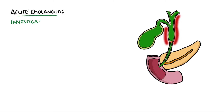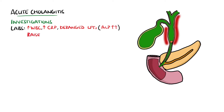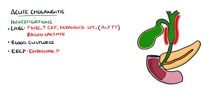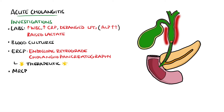Lab tests will show leukocytosis in most instances, as well as deranged liver function tests, especially a raised alkaline phosphatase. Lactate levels may also be raised, which if found in the context of hypotension typically points towards shock. Blood cultures should also be taken in suspected acute cholangitis. The gold standard investigation is endoscopic retrograde cholangiopancreatography (ERCP), as this is also a therapeutic procedure. However, due to the associated risk, it is often done following an MRCP.